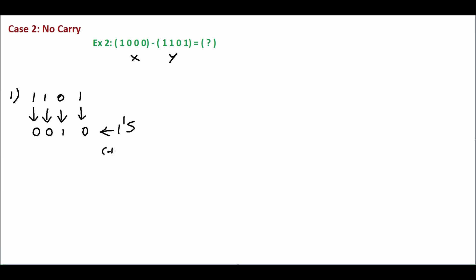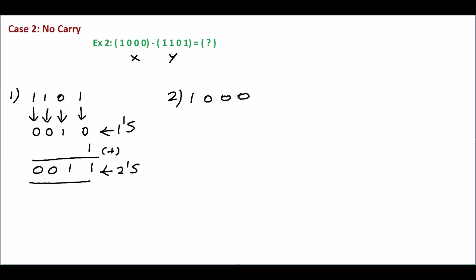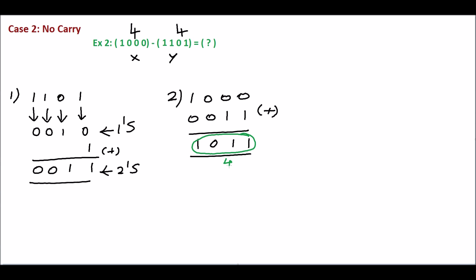Add 1 with this to get the 2's complement: 0 plus 1 gives 1, 1, 0, 0. This is the 2's complement. In step 2, add X and the 2's complement of Y which is 0, 0, 1, 1. Adding: 0 plus 1 is 1, 0 plus 1 is 1, giving sum 1, 0, 1, 1. X is 4 bits and Y is 4 bits. In step 2 we are getting a sum of 1, 0, 1, 1 — totally 4 bits. We are not getting any carry in step 2.